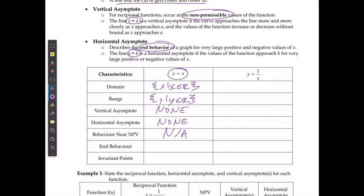For the end behavior of y equals x: as x approaches positive infinity, y also approaches positive infinity; and as x approaches negative infinity, y approaches negative infinity. The invariant points are (−1, −1) and (1, 1).